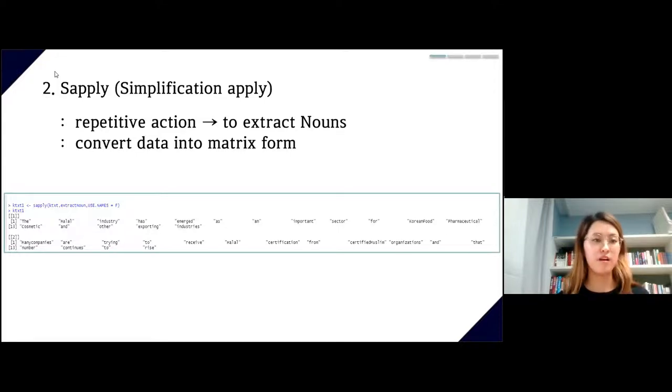Then I used sapply, which means simplification apply. It's a function that keeps doing repetitive actions. You'll see another function called extract.nouns. I tried to extract nouns from the whole text, and it converts data from lines into form of matrices with rows and columns.